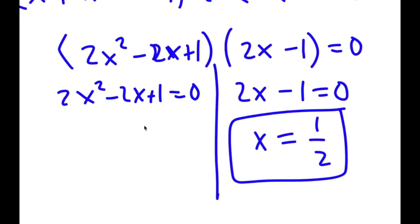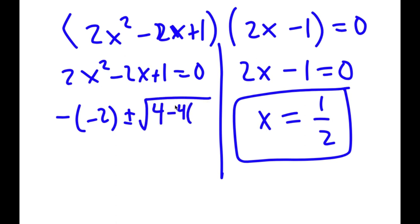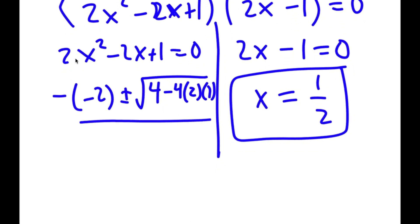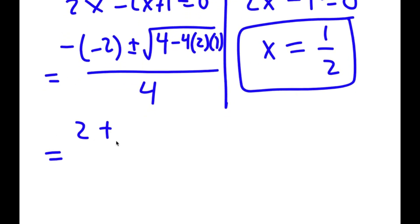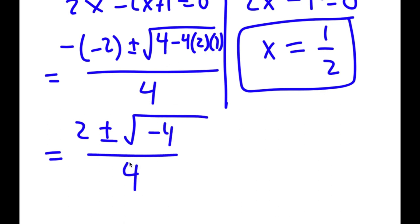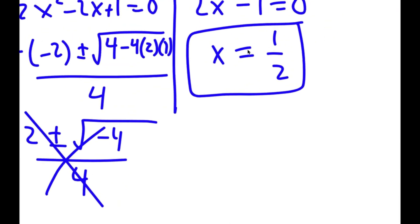For 2x squared minus 2x plus 1 equals 0, I'll use the quadratic formula: negative b, so negative of negative 2, plus or minus the square root of b squared — that's 4 — minus 4 times a, which is 2, times c, which is 1, all over 2a, so 4. This gives positive 2 plus or minus the square root of negative 4 over 4. Since we have the square root of a negative number, there's no real solution. So my only solution is x equals 1 half.